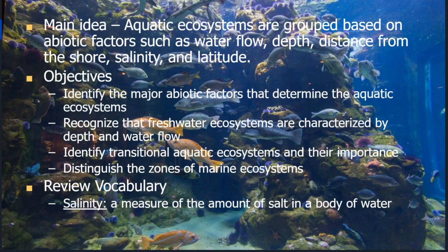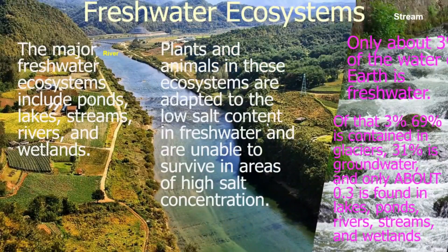For those of you who don't know what salinity means, it's the amount of salt in a body of water. Let's start talking about freshwater ecosystems. Freshwater ecosystems means that they do not have salt water. The major freshwater ecosystems are ponds, lakes, streams, rivers, and wetlands.